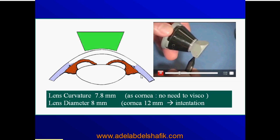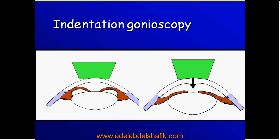The Posner lens has the advantage of a curvature similar to that of the cornea, so we can apply it directly without needing any viscous agent. This lens has a diameter of 8mm, while the cornea has a diameter of 12mm, so we can indent the cornea with this lens. Indentation means pressing on the cornea, which is important to differentiate if we have an angle that looks closed — to determine whether it is actual adhesion between the iris and cornea, or just mere apposition. In the case of apposition, indentation will open the angle; in synechial closure, the angle will still remain closed.